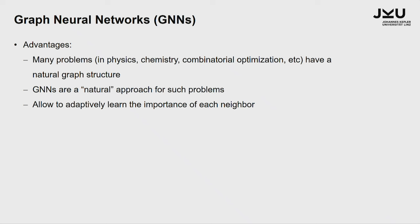The advantages of such graph neural networks are that many problems in physics, chemistry, or combinatorial optimization — like the traveling salesman — have a natural graph structure. So GNNs are very often a natural approach for such problems, and they allow adaptively learning the importance of each neighbor, with a very close connection to the real-world problem at hand.